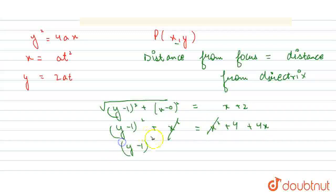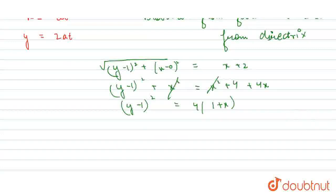So, y minus 1 whole square is equal to 4 common, 1 plus x. Now, the equation will become y square equals to 4x. So, we can say capital Y square equals to 4X.